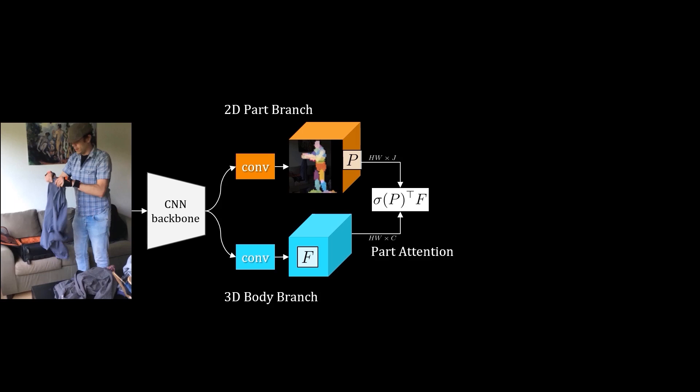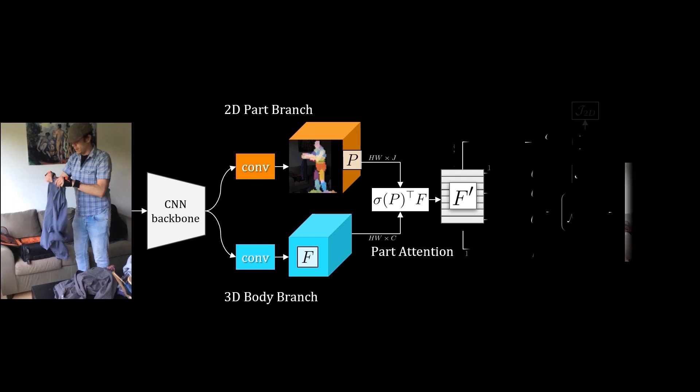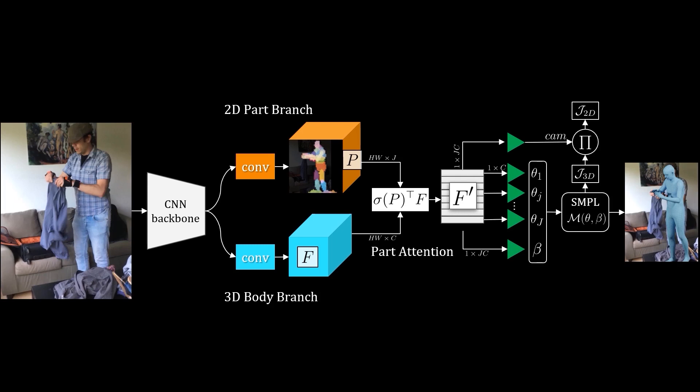To that end, we apply a spatial softmax to obtain 2D probability distributions per body part. We aggregate the 3D body features using these probability maps. We end up with F', which has a size of the number of joints times the number of channels as the aggregated feature vector. We extract pose parameters and a weak perspective camera using separate linear layers.